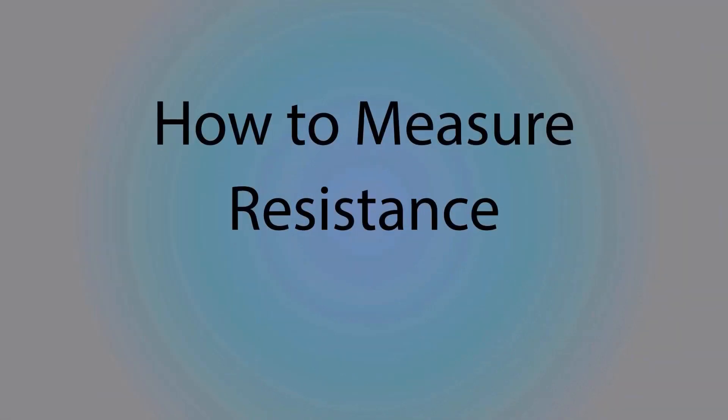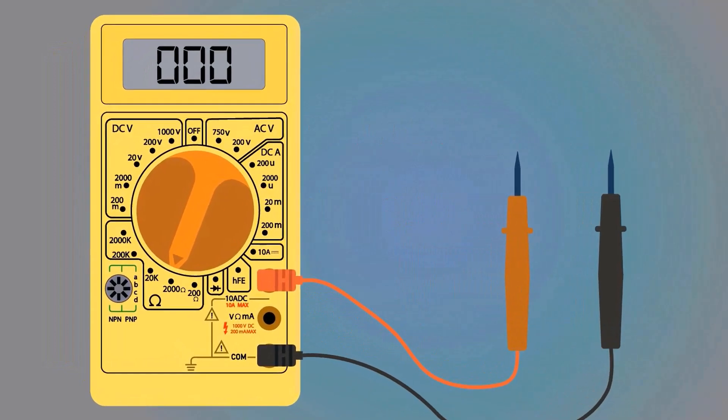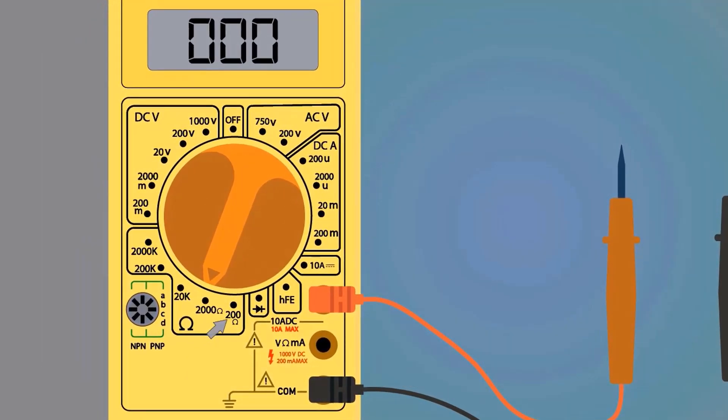How to measure resistance with the help of a multimeter. Take a multimeter. The arrow points out the measuring range of resistance, which is 200 ohms to 2000 kilo-ohms. Here is the ohm sign, which tells us we are measuring resistance.